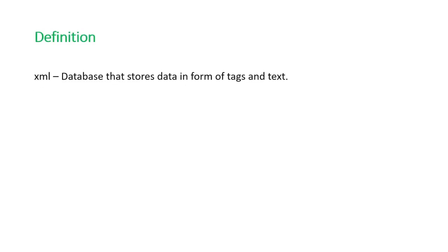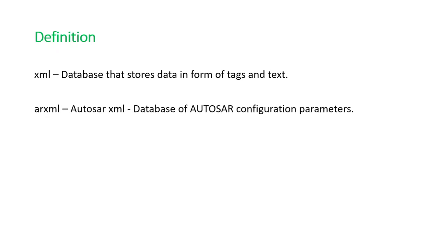So first, what is the definition of an ARXML file? You all know what an XML file is — a normal XML file is simply a database that stores data in the form of tags and text. An ARXML file is the AUTOSAR XML file introduced by the AUTOSAR consortium. It is basically a database of AUTOSAR configuration parameters.